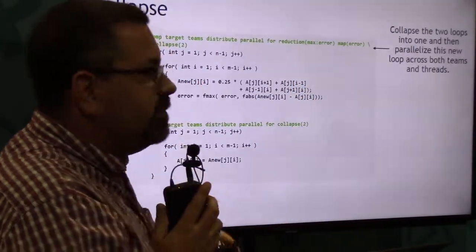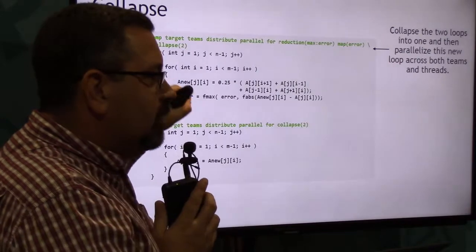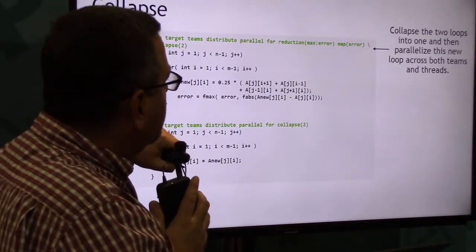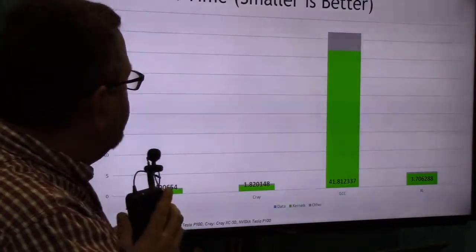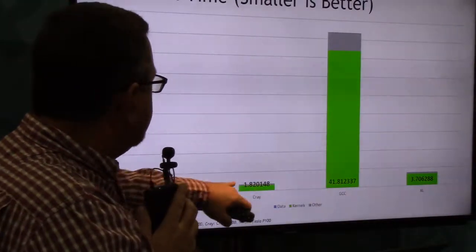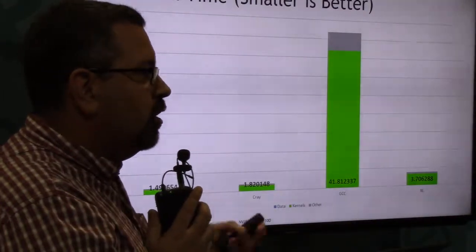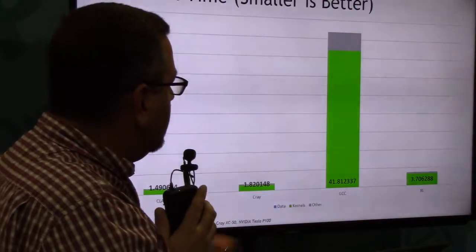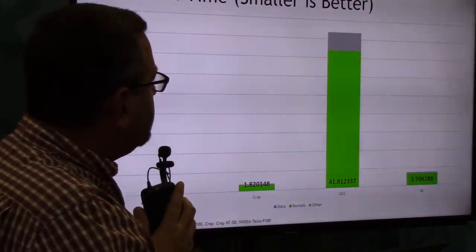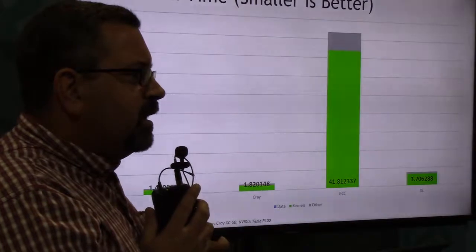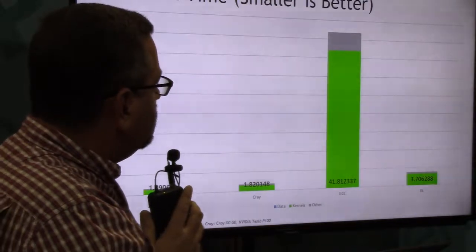This particular operation is a stencil operation, so there's a lot of locality here. In actuality I may be blowing out some of my locality by doing this. GCC is still a bit of an outlier, but Clang and XL are now closer in line with what Cray did. So Cray was clearly already doing some form of parallelization across both loops, and by collapsing it together, I've enabled the other compilers to do the same. There's still a lot of overhead with GCC that needs to be optimized away — they're doing some scalar copies that the other compilers aren't doing, so clearly they aren't necessary, and I need to work with them to figure that out.